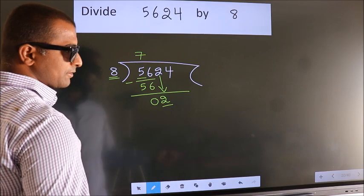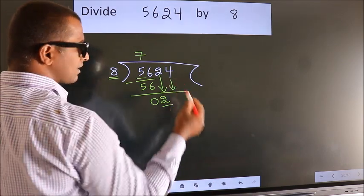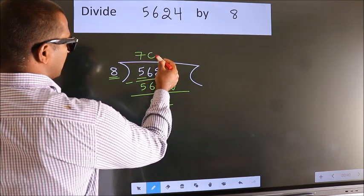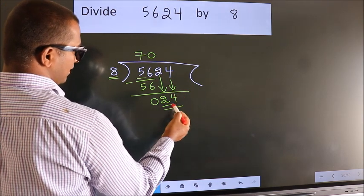So we should bring down the second number. The rule to bring down the second number is to put 0 here. Then only we can bring down this number. So, 24.